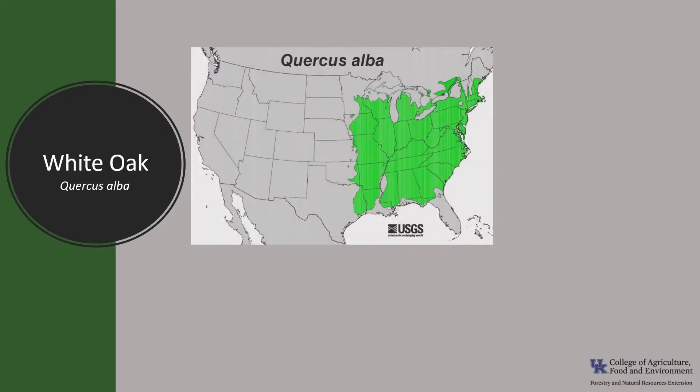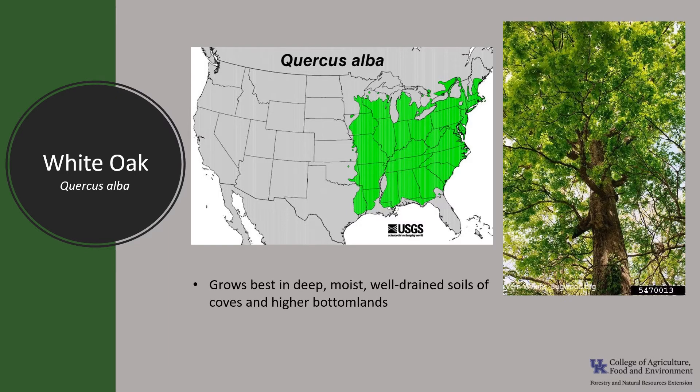White oak is native to the eastern and midwestern United States. It grows in many sites and soil types but grows best in deep moist well-drained soils of coves and higher bottomlands. In the southern Appalachians it exhibits best growth on north-facing slopes and in coves.